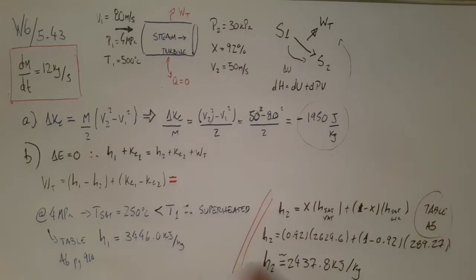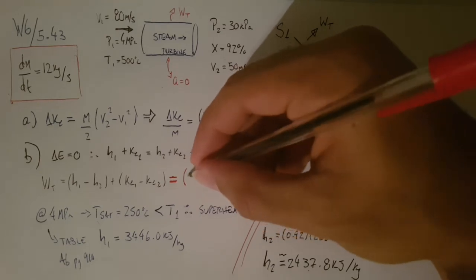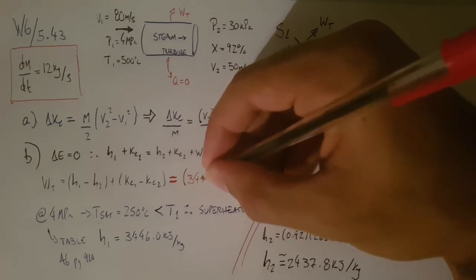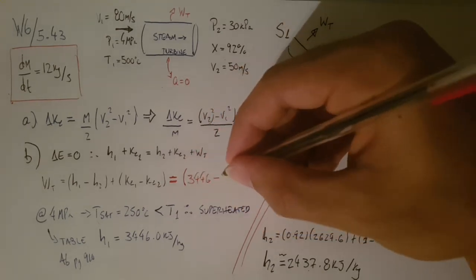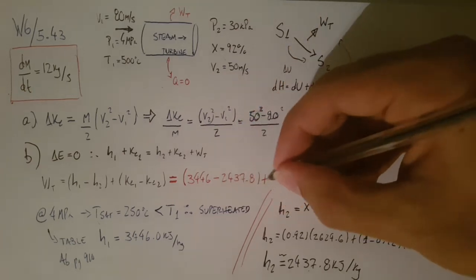So we have that already in joules. And then this guy here is going to be just the difference between the two. This is joules per kilogram. This is kilojoules per kilogram. So we need to transform this guy into joules or this guy into kilojoules, whatever you guys find that makes more sense. Because these values are big, I'm actually just going to put this guy into kilojoules. It's going to make more sense for us at this moment. Okay, so that's going to be, let's see, 3446 minus 2437.8 plus, divided by 1000, 1.95.